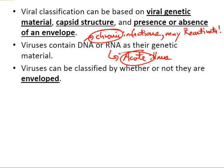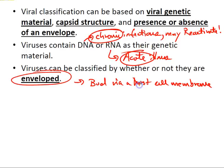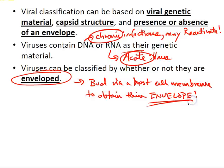Viruses can be enveloped or non-enveloped. Enveloped viruses bud through a host cell membrane, acquiring host membrane phospholipids as an outer shell. This allows the virus to slowly replicate and emit progeny from host cells rather than lysing the host cell when maximum virion production is reached.